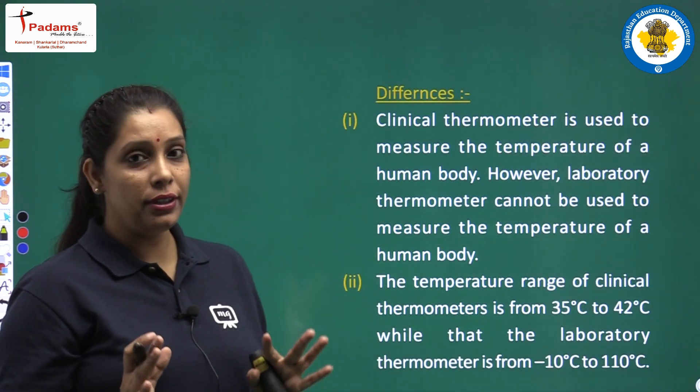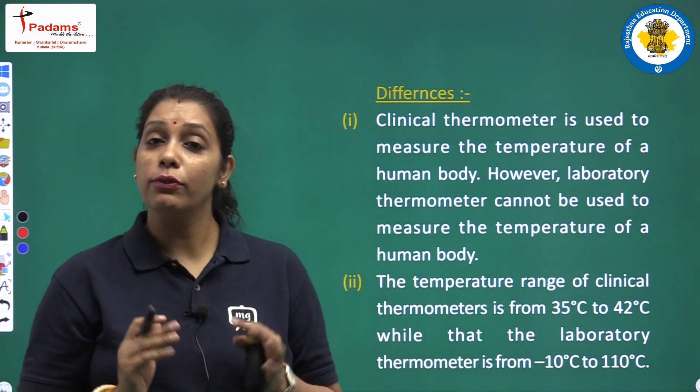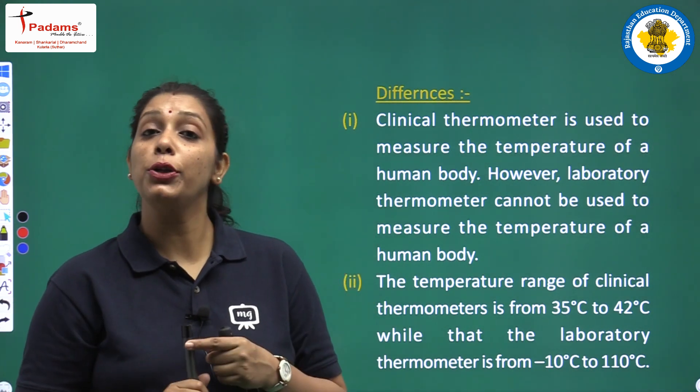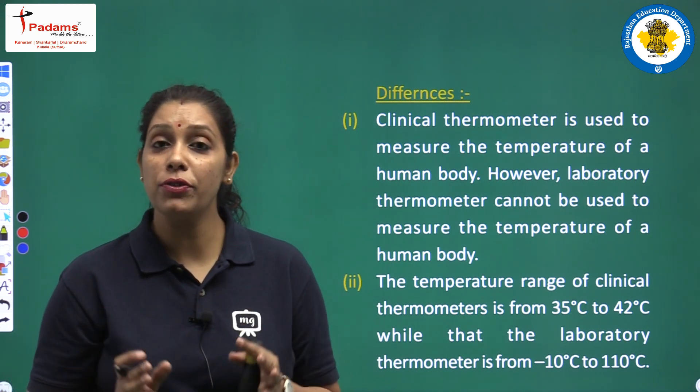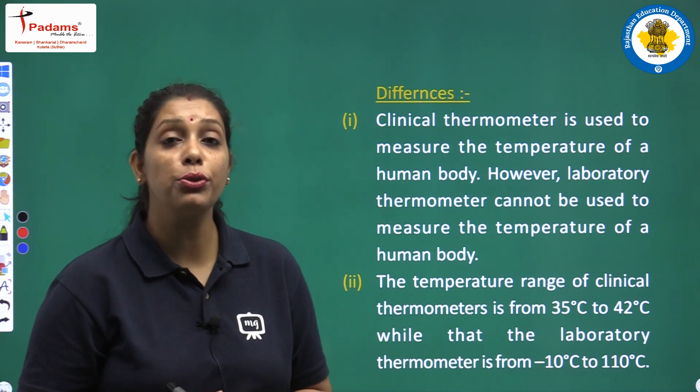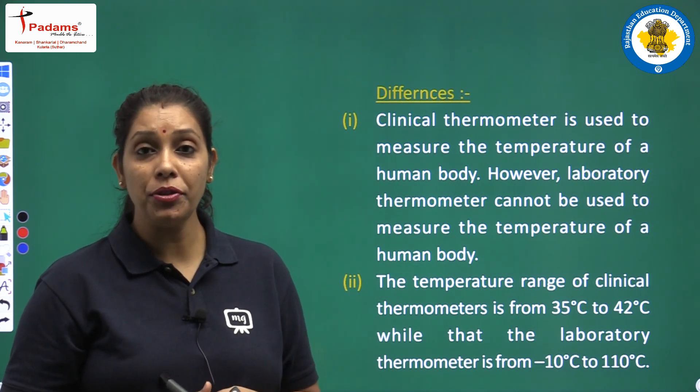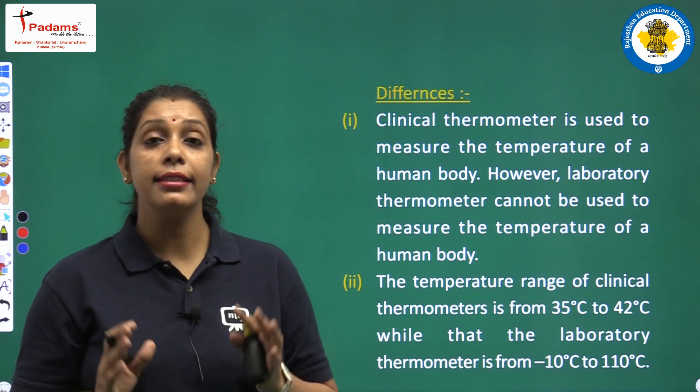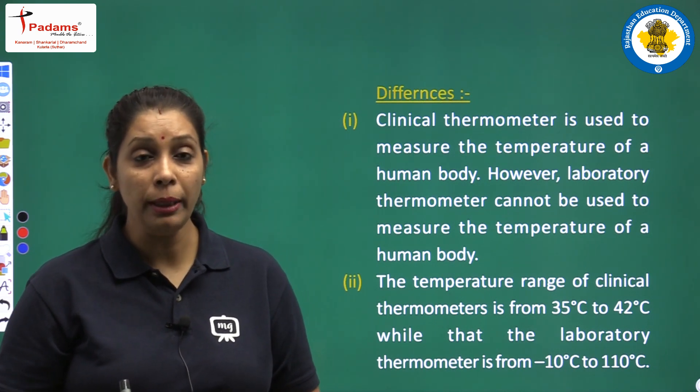Let us begin with differences. What are the major differences? First difference is their use is different. We are using clinical thermometer for measuring the human body temperature and laboratory thermometer is used for laboratory purposes. We are using it in science laboratories. And second, they both have different ranges.